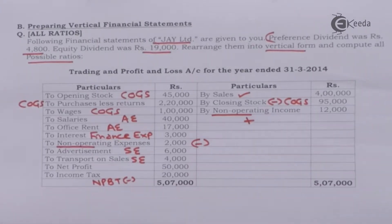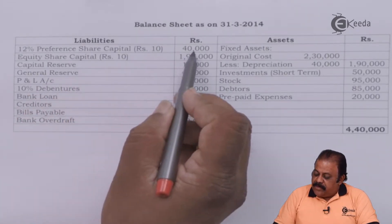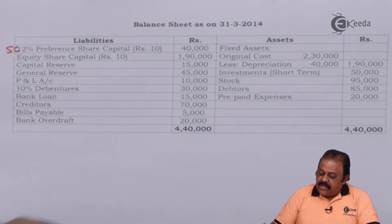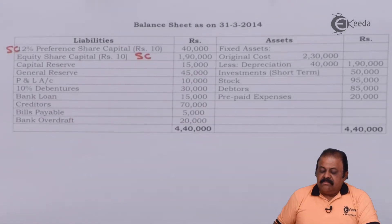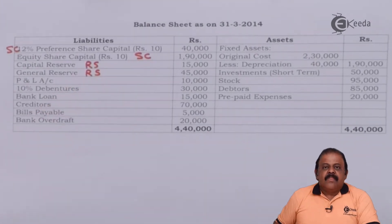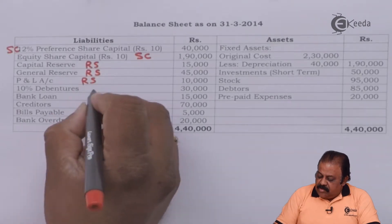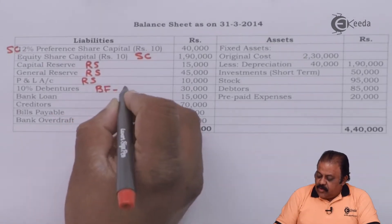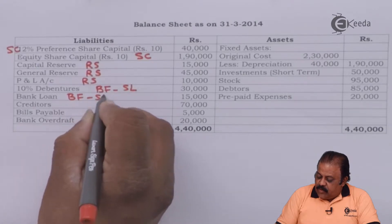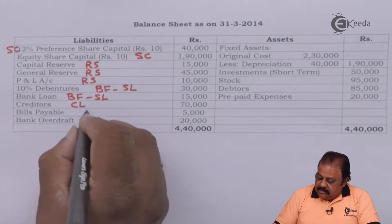Non-operating income will be added to operating net profit. On the balance sheet liability side: 12% preference share capital of rupees 10, totaling 40,000. Equity share capital is part of shareholders' fund. Capital reserve, general reserve, and profit and loss account are reserves and surplus. 10% debentures are part of borrowed funds under secured loans. Bank loan is also a borrowed fund under secured loans.